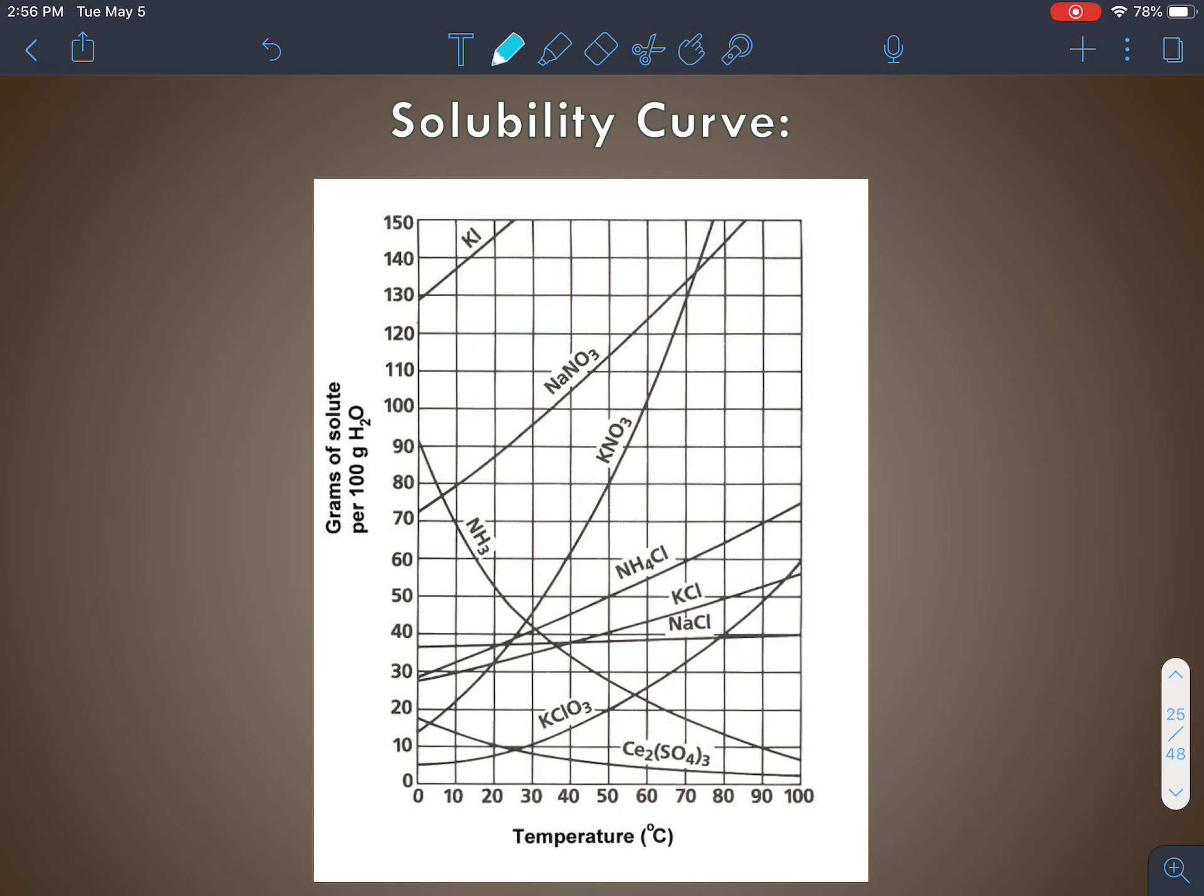So if we have a substance that is at... say we dissolved 80 grams of NaCl at 70 degrees. I think that that puts us around here.